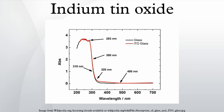Indium-tin oxide is one of the most widely used transparent conducting oxides because of its two chief properties: its electrical conductivity and optical transparency, as well as the ease with which it can be deposited as a thin film.